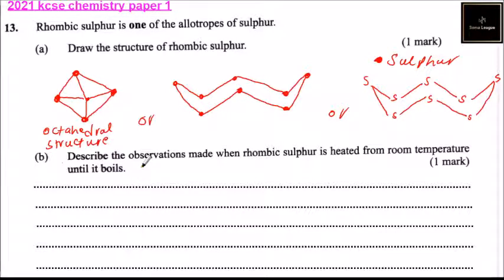Part B. Describe the observation made when rhombic sulfur is heated from room temperature until it boils. When rhombic sulfur is heated above 360 Kelvin, it gives monoclinic sulfur. What will happen is yellow solid forms a liquid.